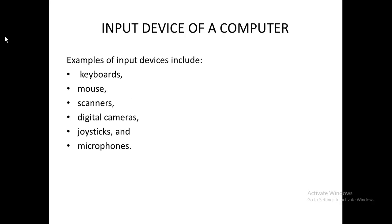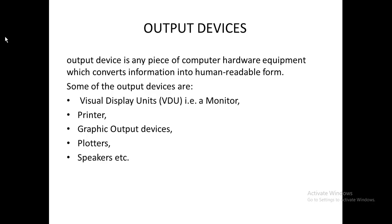We are now going to talk about the input devices of a computer. I've already talked about the keyboard and the mouse. Let's go to the other input devices. We have scanners, which we use for inputting. We also have cameras, joysticks, and microphones. All these are tools which we use to input information into the computer.